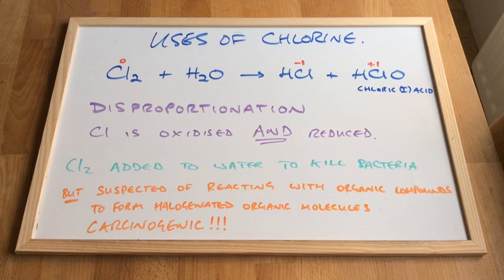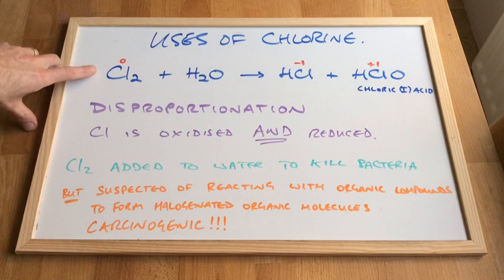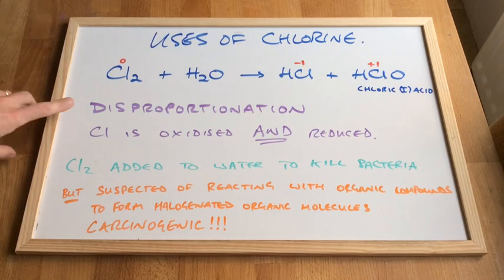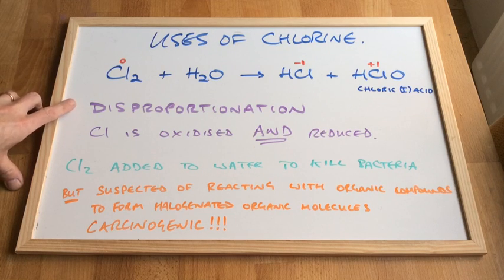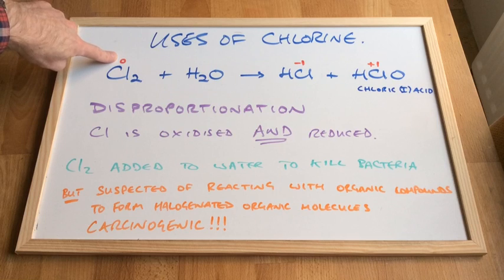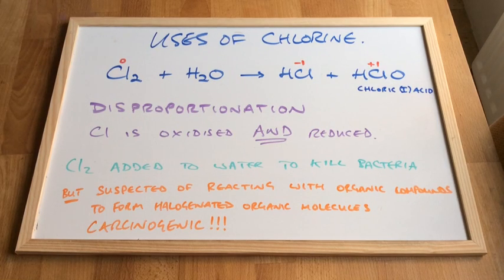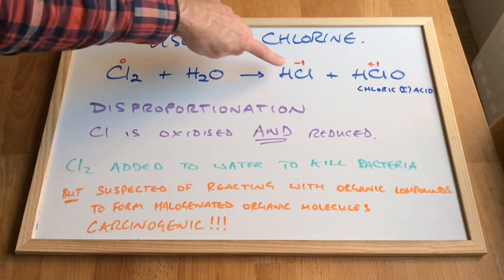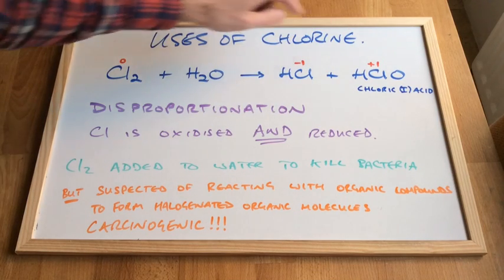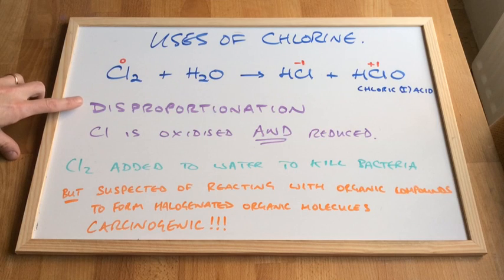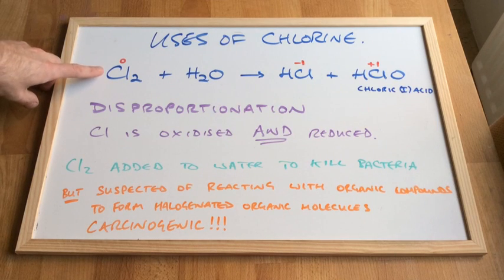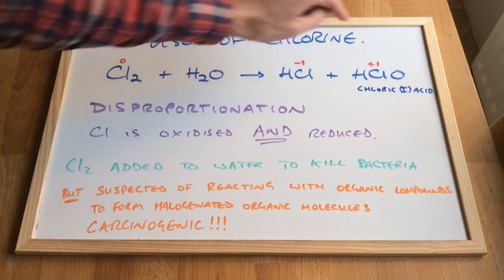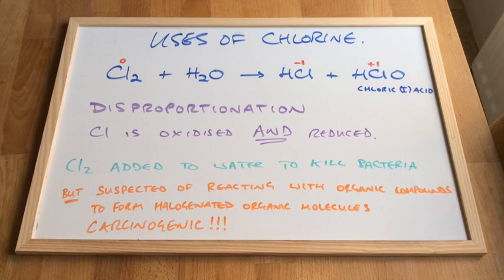Looking at the reaction of chlorine with water — Cl2 + H2O gives HCl and HClO — this is classed as a disproportionation reaction. The oxidation number of chlorine in Cl2 is zero. In HCl it's minus one, and in HClO (chloric(I) acid) it's plus one. So chlorine has been both reduced (oxidation number went down) and oxidised (oxidation number went up). That's called disproportionation: one of the two chlorine atoms is reduced, the other is oxidised. The same element is simultaneously oxidised and reduced.